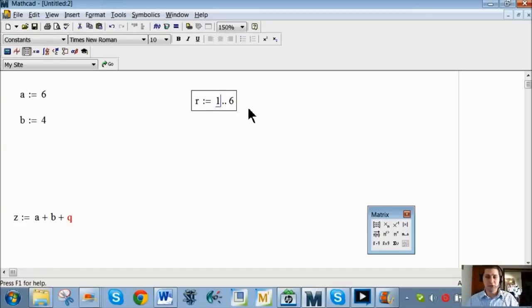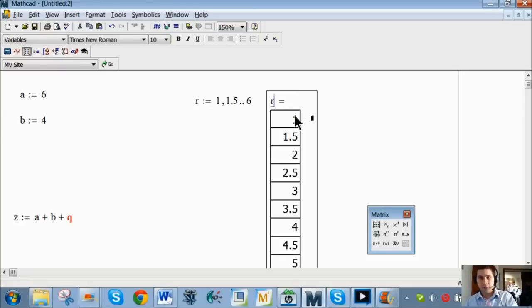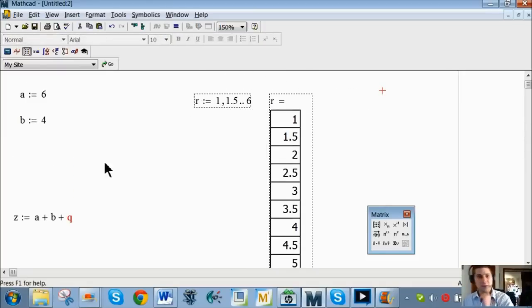If we wanted to change our step increment, we could do 1 comma 1.5 all the way to 6 and now we're going to have a whole bunch more. The problem comes in when we try to add scalar plus vector. It doesn't like that. This is why we need to use the index idea.